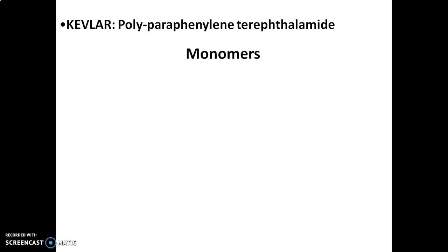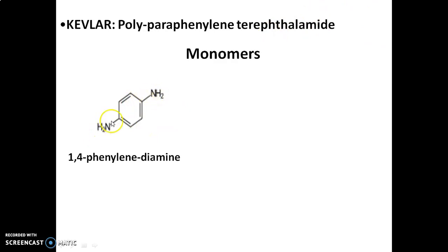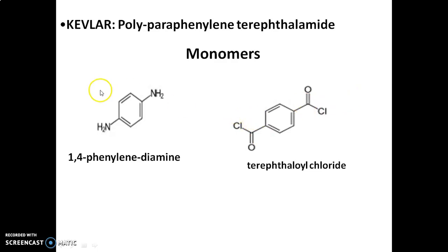The second point is to study the monomers. The first monomer — let us go through the structure. There is a benzene ring with one NH2 group at position 1 and a second NH2 group at position 4. So we can call it 1,4-phenylene diamine, because NH2 is also known as amine. So the first monomer is 1,4-phenylene diamine. The second monomer has a benzene ring with C=O-Cl groups at positions 1 and 4, and this is known as terephthaloyl chloride.